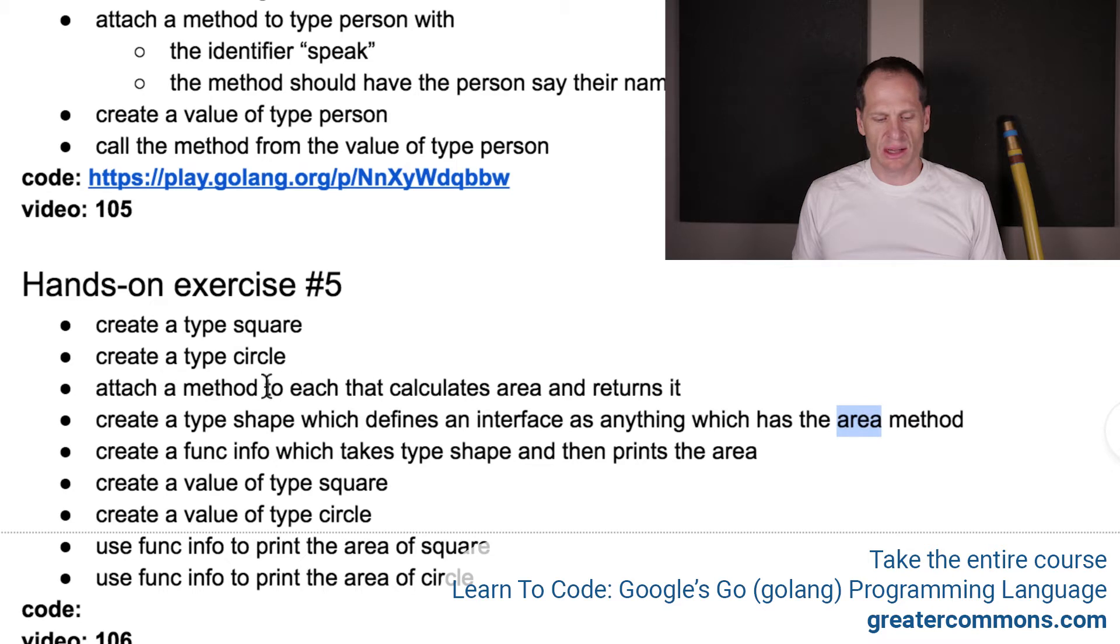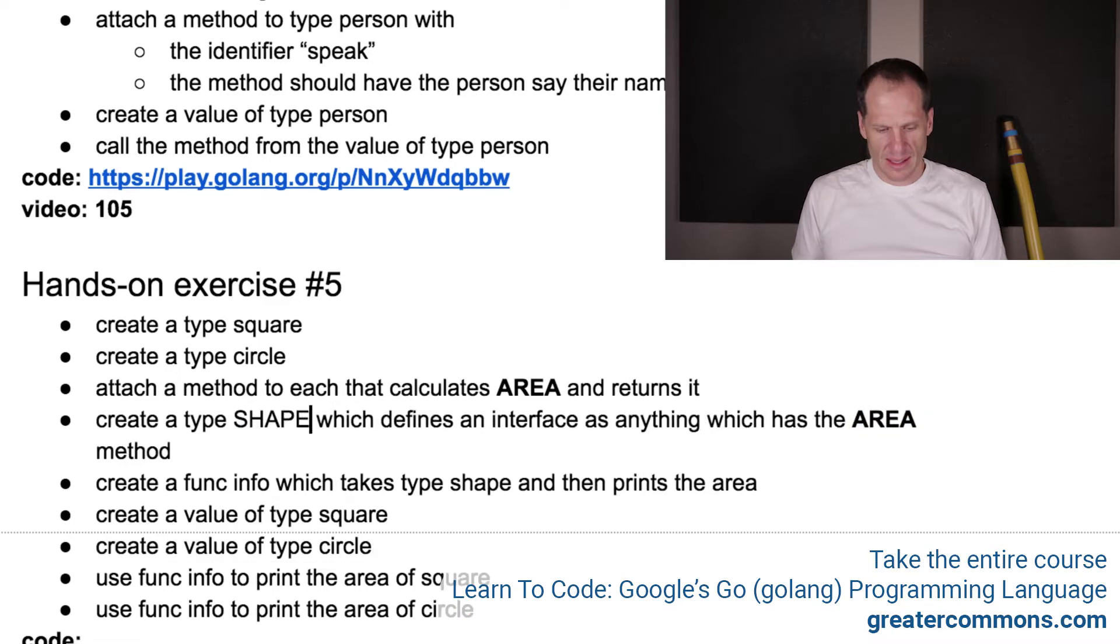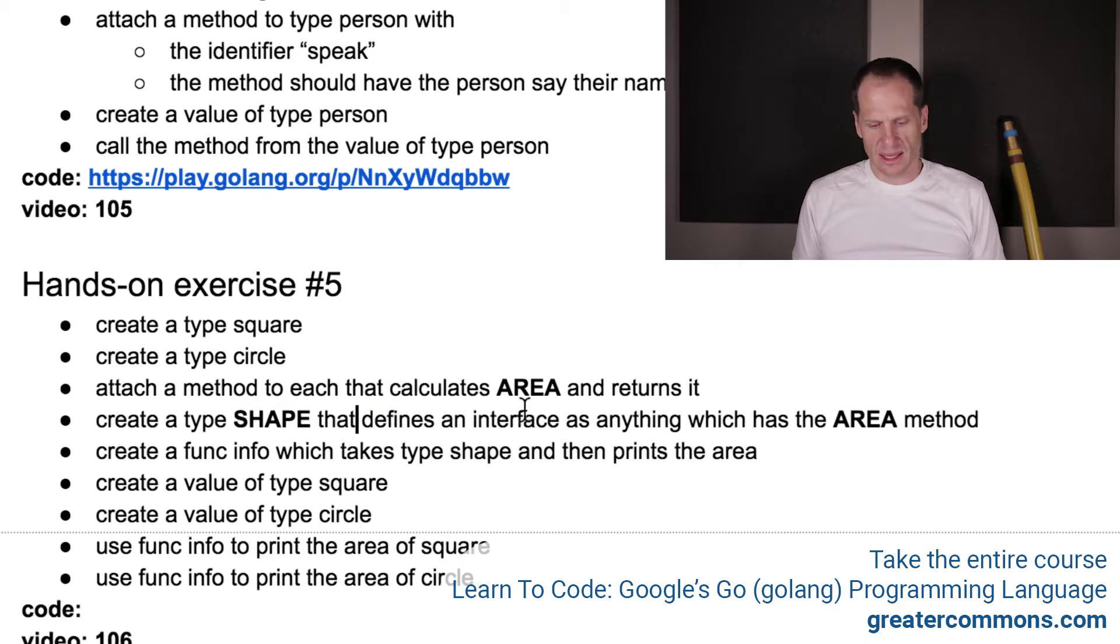So we're attaching a method to each that calculates the area. So let me just make that big there. And then we're going to have area here, right? That's important. So we're going to create a type shape, right? Which defines an interface as anything which has the area method. Create a type, I'm just wondering, that defines an interface as anything that has. I'm just shortening this sentence. The area method.